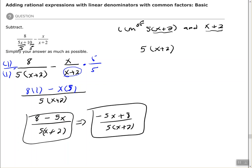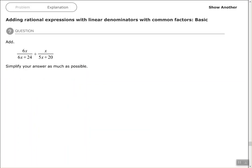So in this one we factored our denominator, found our least common multiple of our denominators, and went from there. Let's look at another one. We have 6x over 6x plus 24 plus x over 5x plus 20. Again, I want to add these, but we need to find a common denominator.